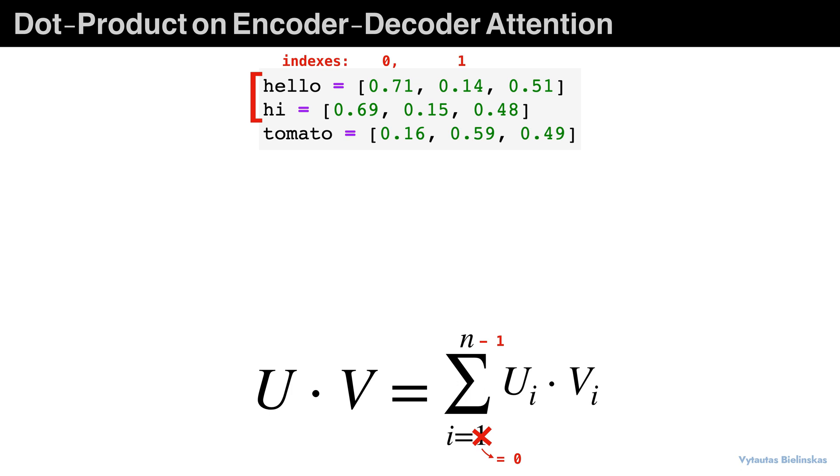So at the index zero let's take hello and hi. What we will do is we take the zero index of hello which is 0.71 multiply by 0.69 which is hi.